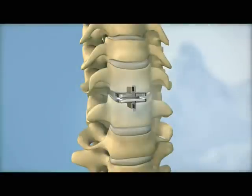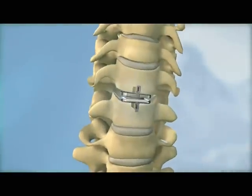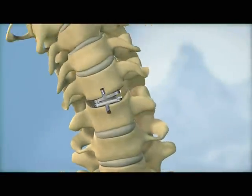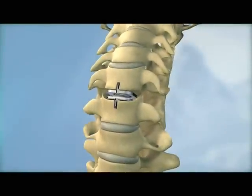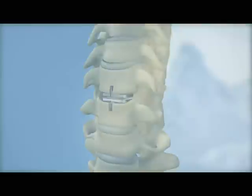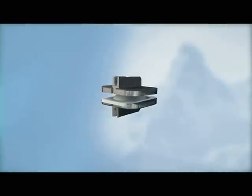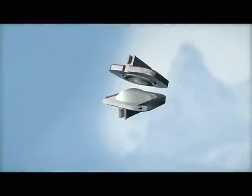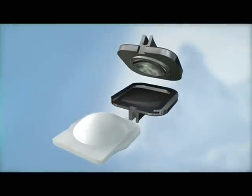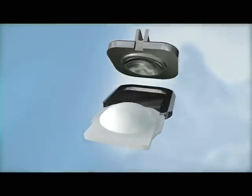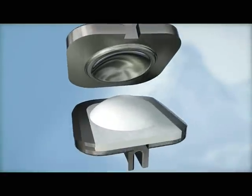The ProDisc-C is a ball and socket implant that is composed of two cobalt chrome alloy endplates and a polyethylene insert. The polyethylene insert is affixed to the bottom endplate forming the ball and a polished dome in the top endplate forms the socket. The implant components work together with the surrounding spinal structures to provide stability and function.